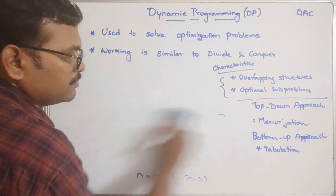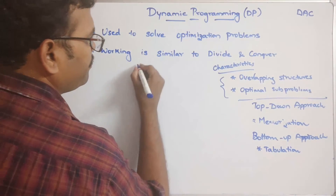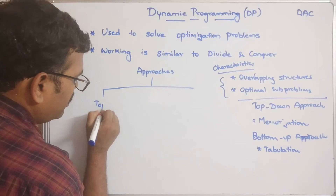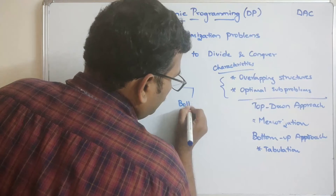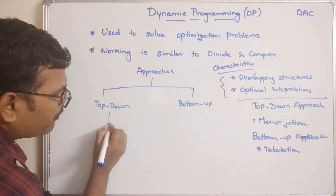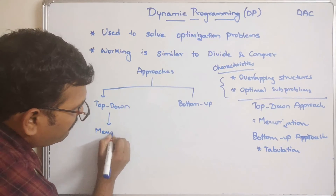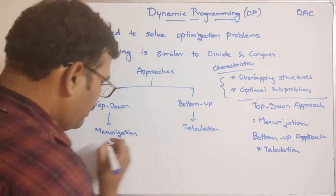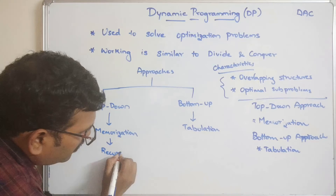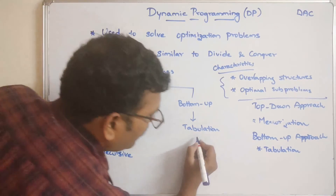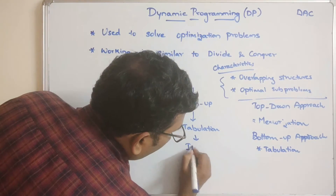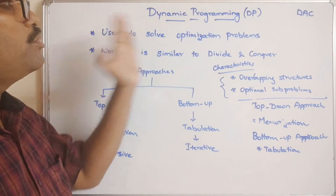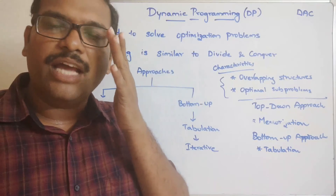There are two approaches to dynamic programming: the top-down approach, which uses memoization and a recursive function; and the bottom-up approach, which uses tabulation and is iterative, avoiding recursion. These are the different approaches used to solve any problem using dynamic programming.